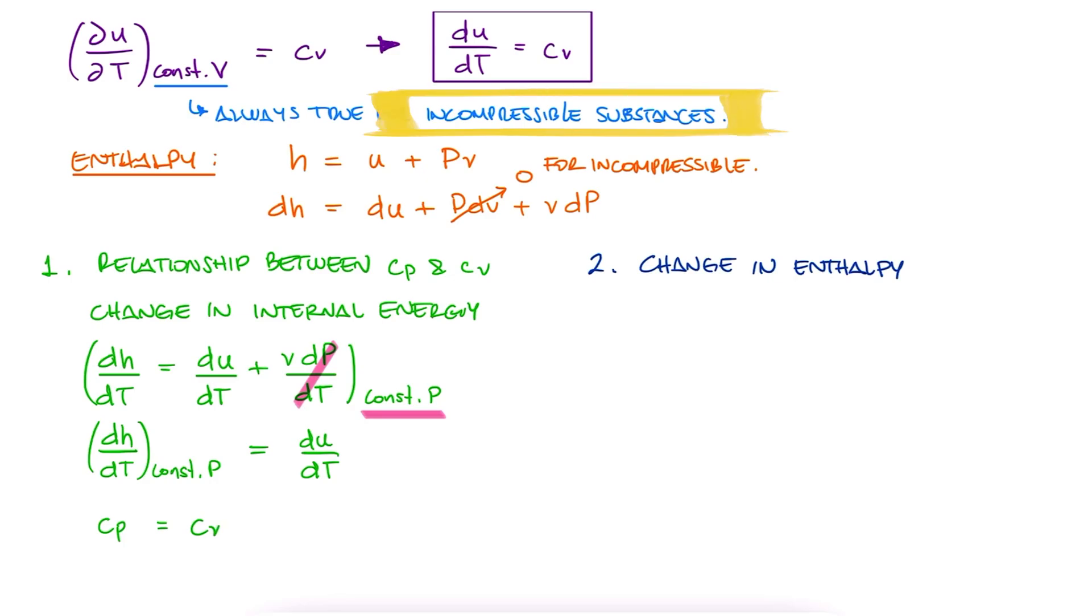This means that for an incompressible substance, cp is equal to cv, or just c, the specific heat.